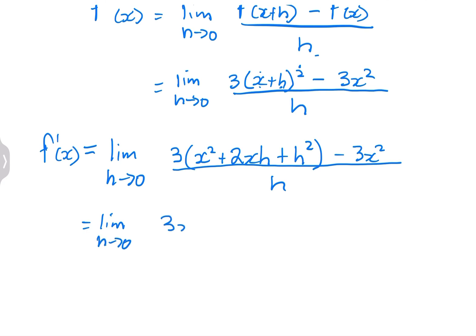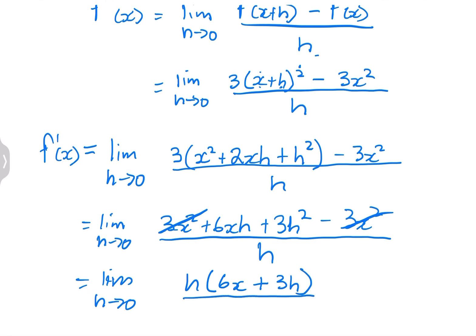So that will be 3x squared plus 6xh plus 3h squared minus 3x squared. And it will always work out in such a way that you are left with just the h, terms with h in them, divided by h.